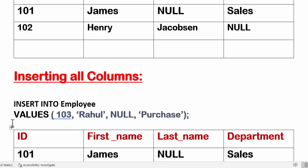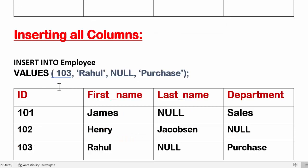Sometimes you need to explicitly write null for a particular data. When you are inserting all columns, you can skip listing column names, but you must provide a value for every column. There are four columns, so you must write four values. If data is missing for a particular column, you need to write null explicitly, otherwise SQL will throw an error that the number of columns doesn't match the number of values.